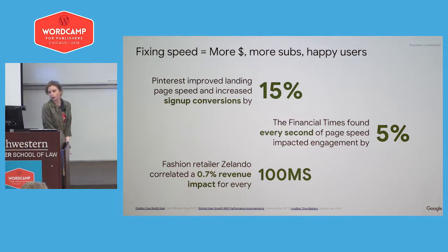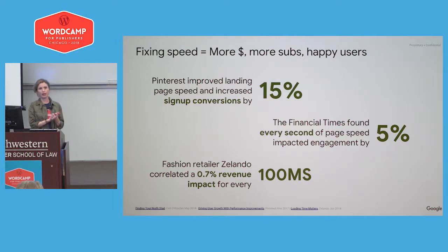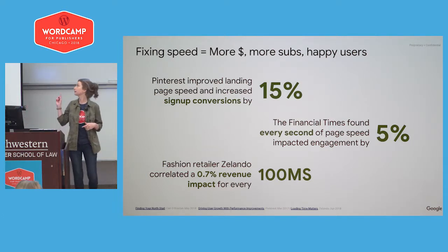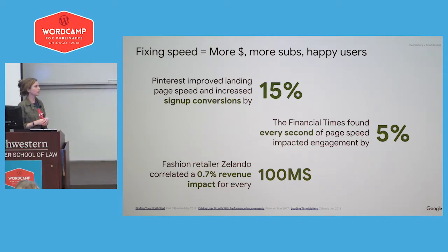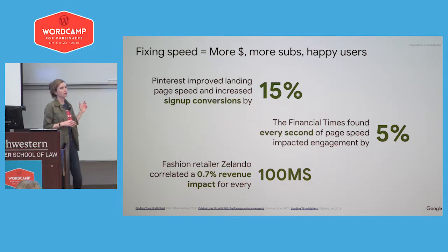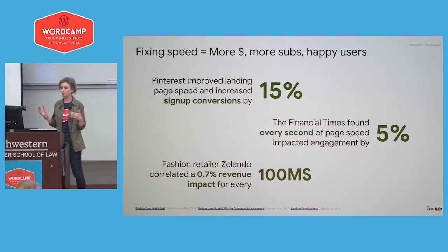The Financial Times proved just that. In A/B testing, they correlated a 5% variance in engagement across all customer segments for every second of site speed. For every second that their site was faster or slower, they were able to track a 5% change in user engagement, and then correlate that to millions of dollars in advertiser and subscriber revenue. Similarly, Pinterest correlated a 15% change in sign-up conversions based on landing page site speed. Both of those case studies involved only a change in the speed of the site — no change to site design or other user experience factors.